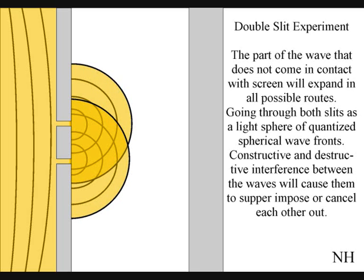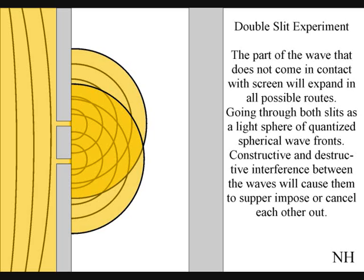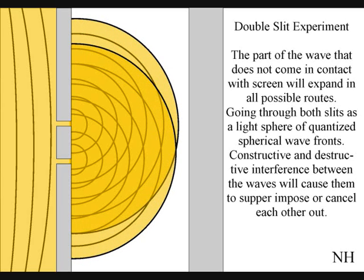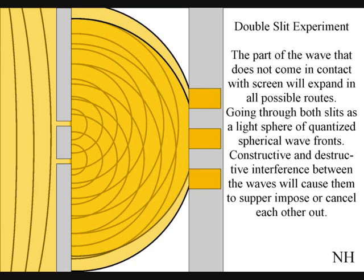Constructive and destructive interference between the waves will cause them to superimpose or cancel each other out. When this wave particle function comes in contact with the screen it will collapse, creating moments of time and quantum particles in the shape of an interference pattern.